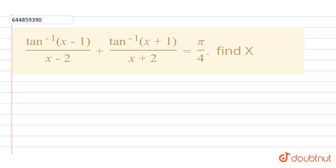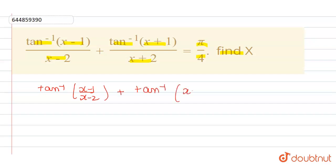Hello guys, welcome to Doubtnut. Today's question: we have given tan inverse of (x minus 1) by (x minus 2) plus tan inverse of (x plus 1) by (x plus 2) is equal to pi by 4. Now we have to find the value of x.